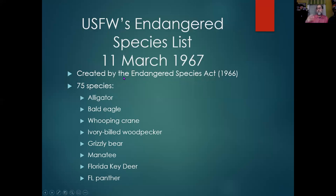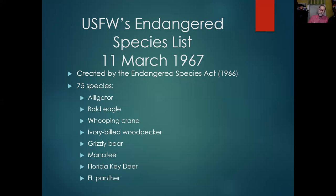The very first official list came out on March 11th, 1967 — though there was already a 1965 list, so people were already working on this before the law passed. This is the official list: 75 species altogether.